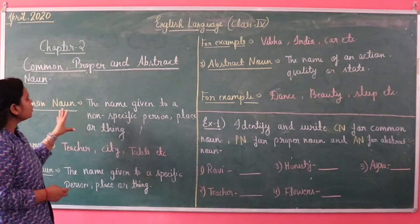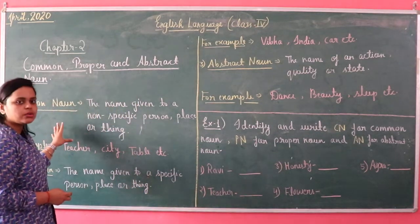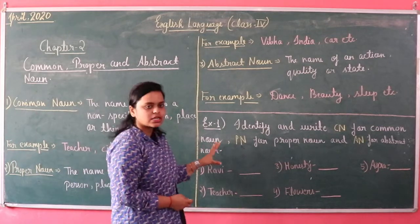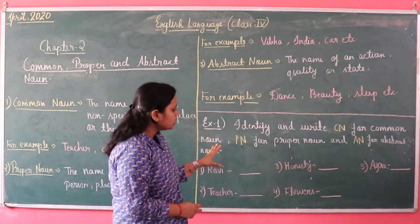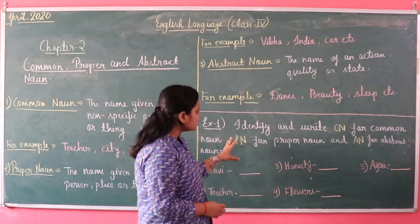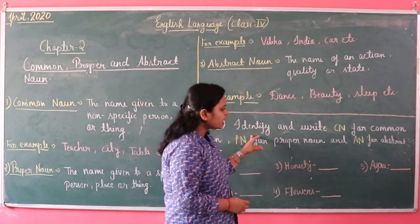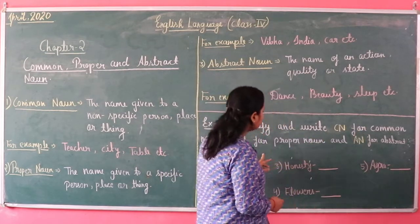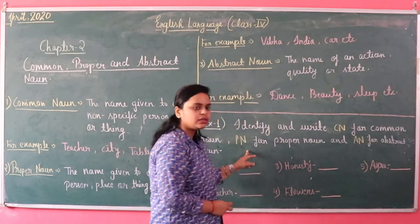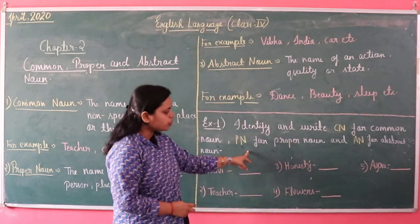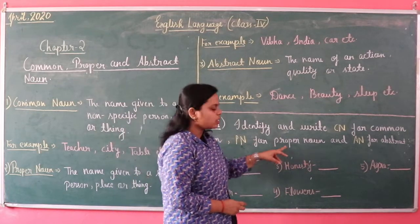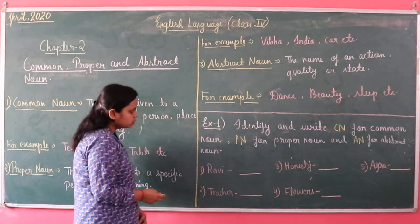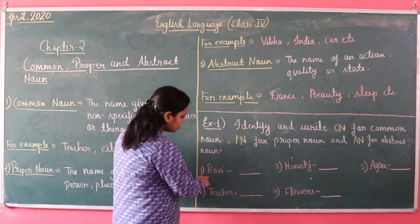Common noun, proper noun, and abstract noun are the three kinds of noun. Now please pick up Exercise Number 1. In this exercise, identify and write CN for common noun, PN for proper noun, and AN for abstract noun. Let's solve the exercise.